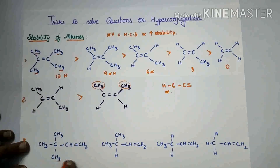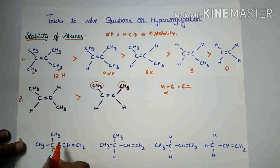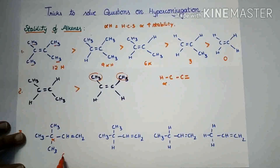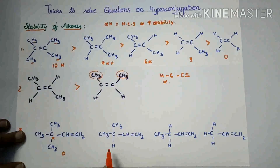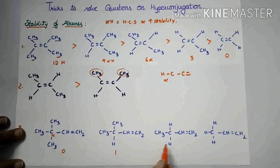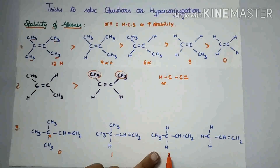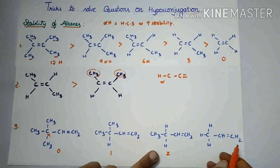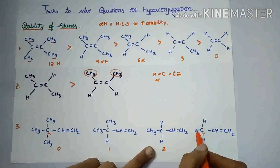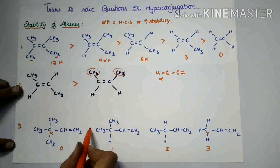In this next question, this is the alpha carbon and there are no alpha hydrogens — zero alpha hydrogens. Here, one alpha hydrogen. In this compound, two alpha hydrogens are there. And here, this is the alpha carbon — three alpha hydrogens are there. So the stability order is as follows.